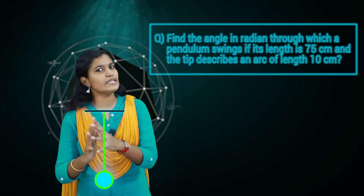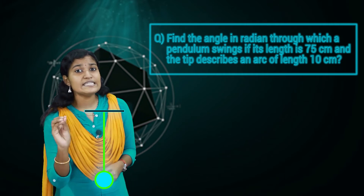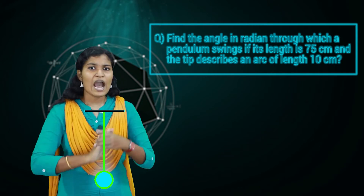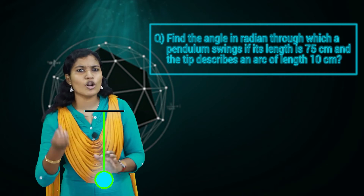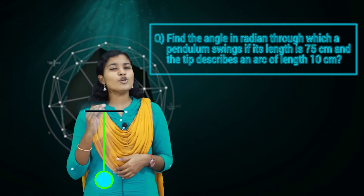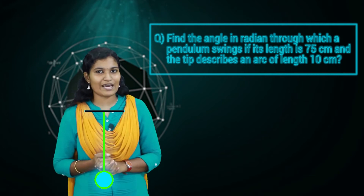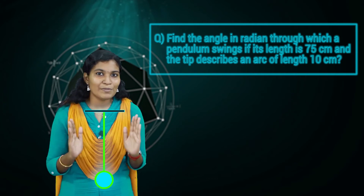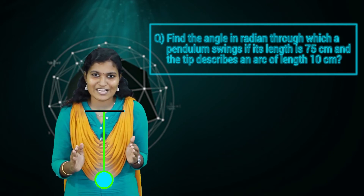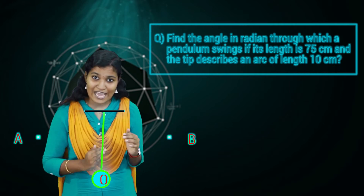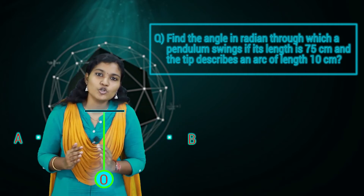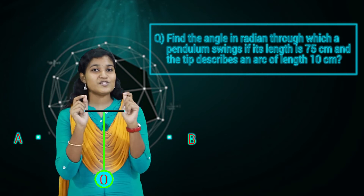The length of the pendulum is 75 cm and it describes an arc of length 10 cm. A pendulum is connected on a rigid support with a bob at the end. We know how a pendulum oscillates — from the mean position O to point A, then back to O, then to B, then back to O. That is one oscillation.